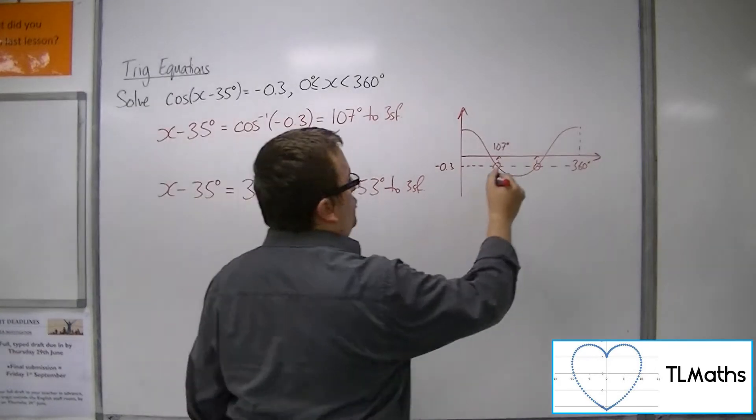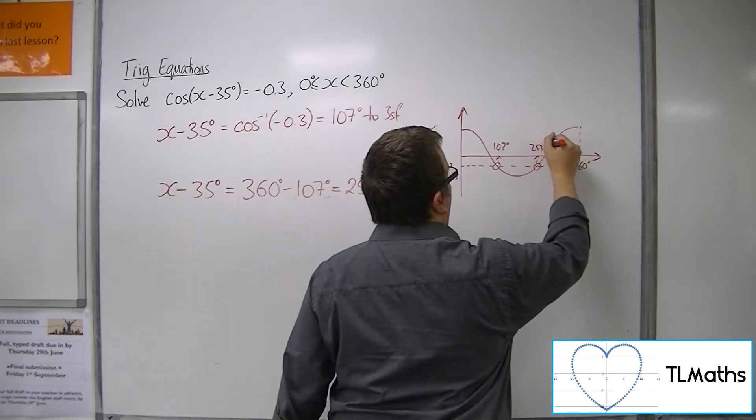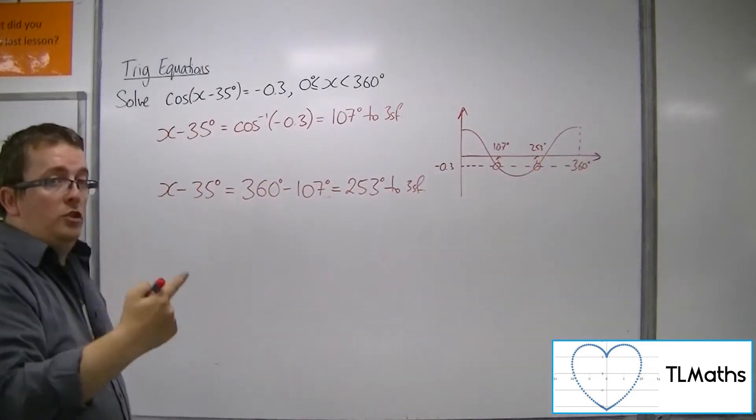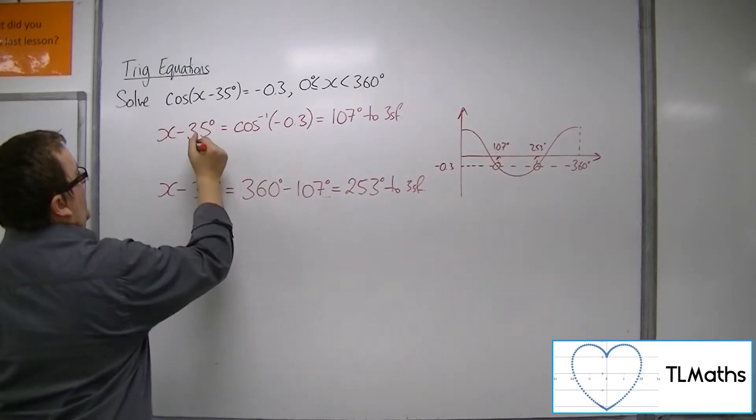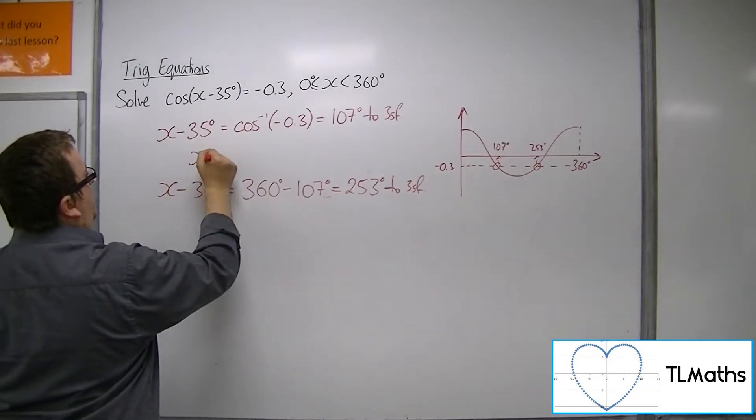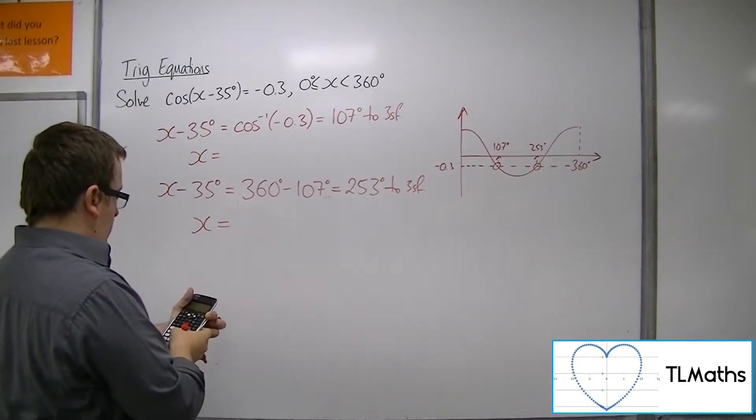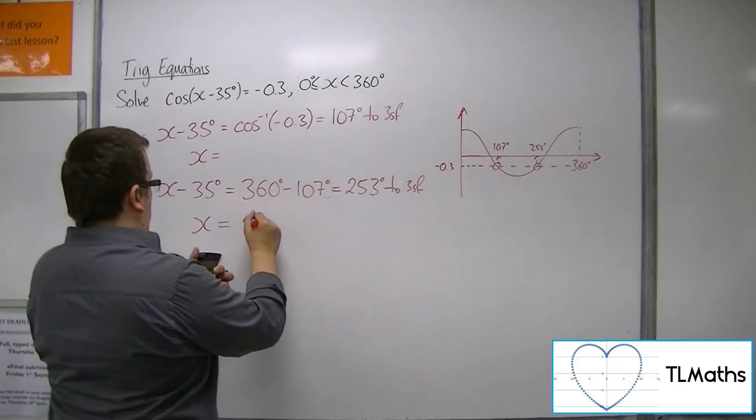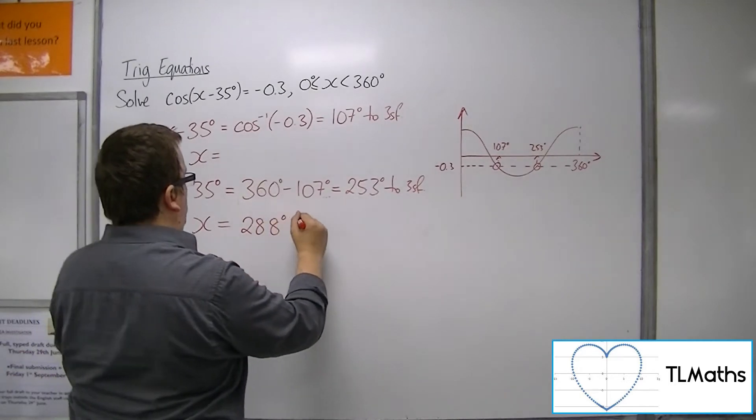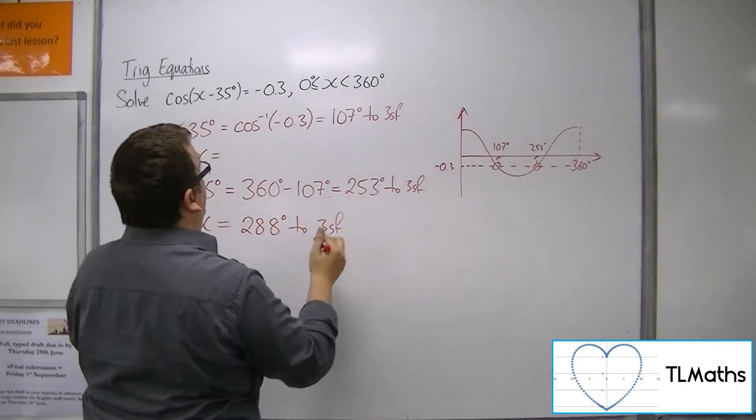So that's my second solution there. So we now want to apply the transformation. So we add 35 degrees to both of them. So add 35, we get 288 degrees to 3 significant figures here.